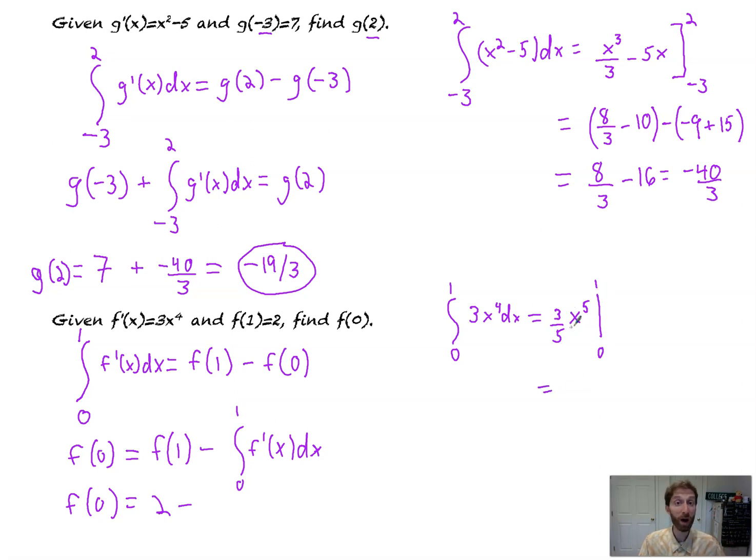Not bad. Not bad at all. Well, that's going to be, well, f of b, plug in 1 to the 5th is 1, times 3 5ths, minus, plug in 0, you're going to get 0. So that is equal to 3 5ths. Replace that with the number we just got for it. 2 minus 3 5ths is 10 5ths minus 3 5ths. f of 0 is 7 5ths.